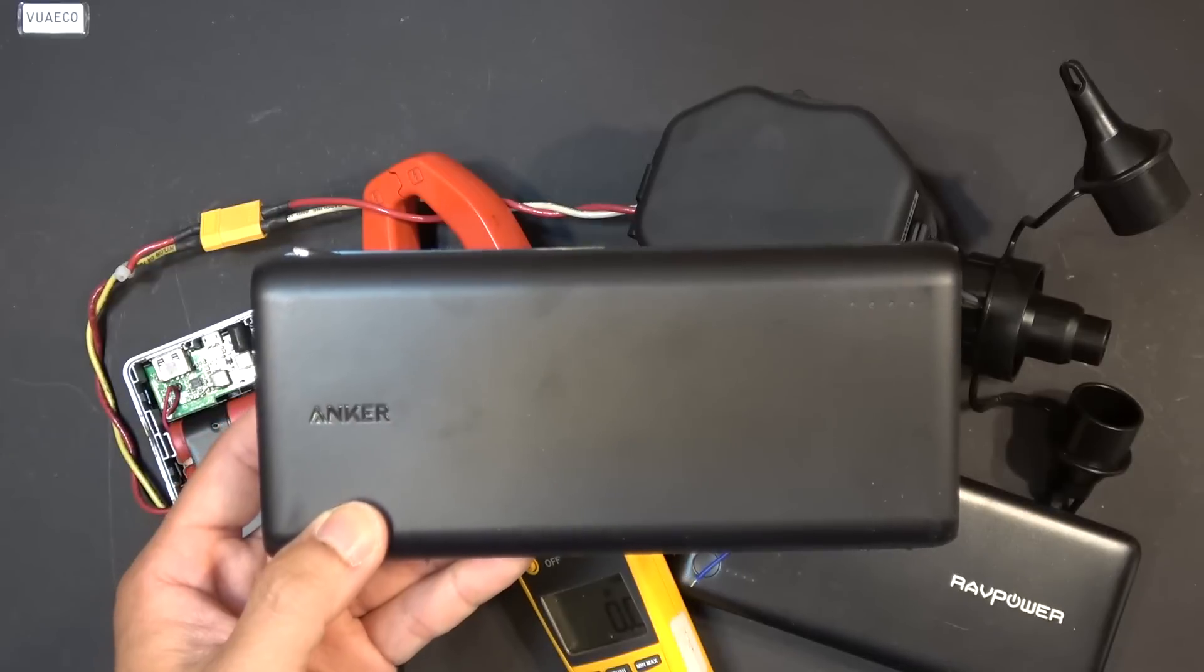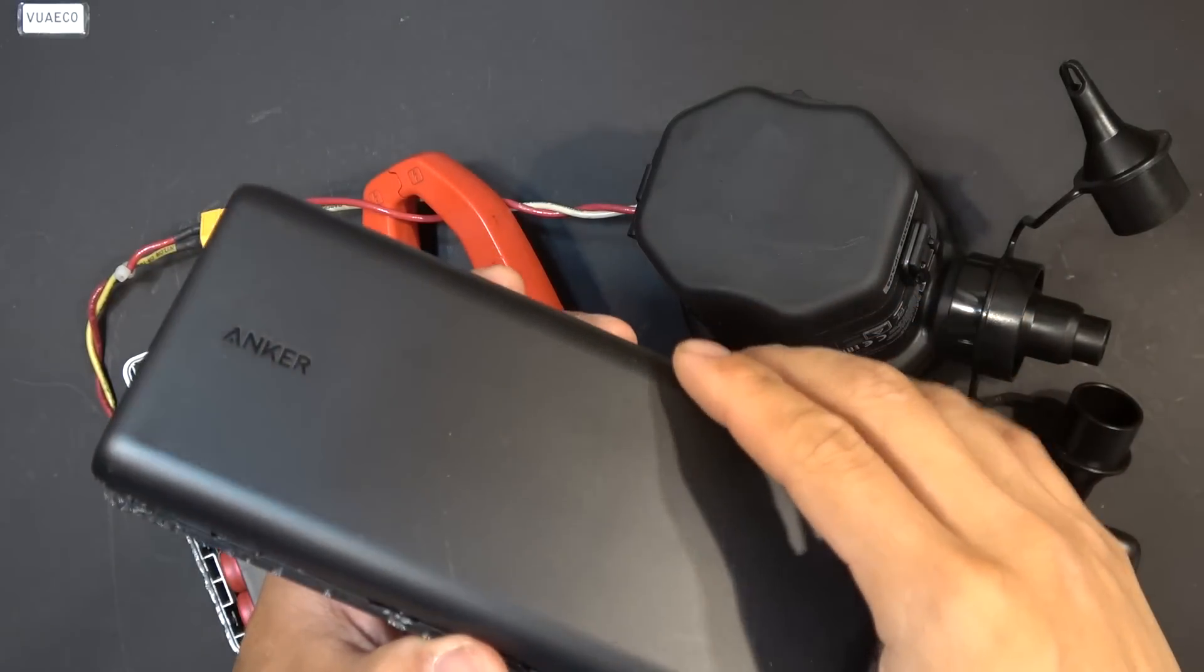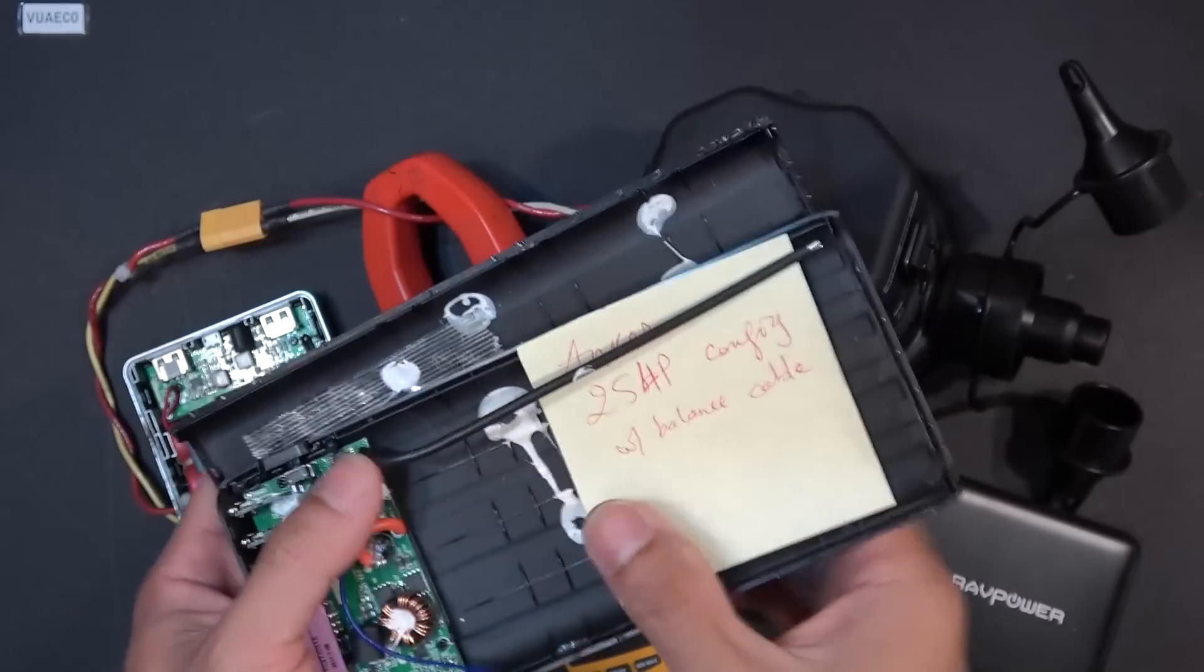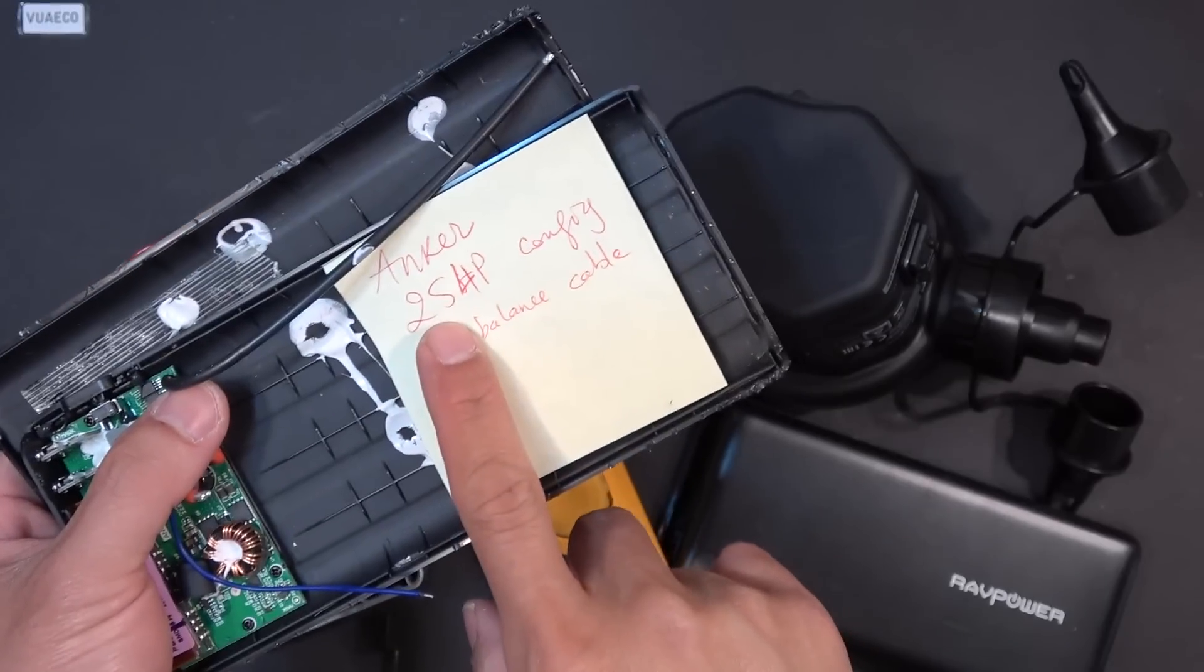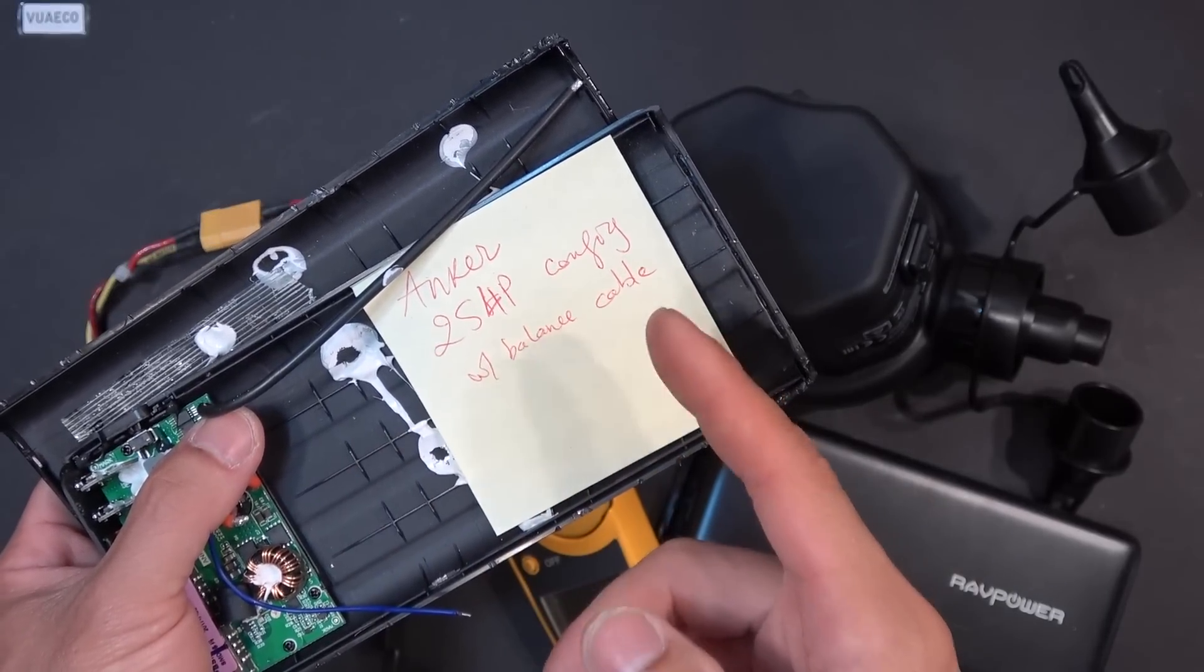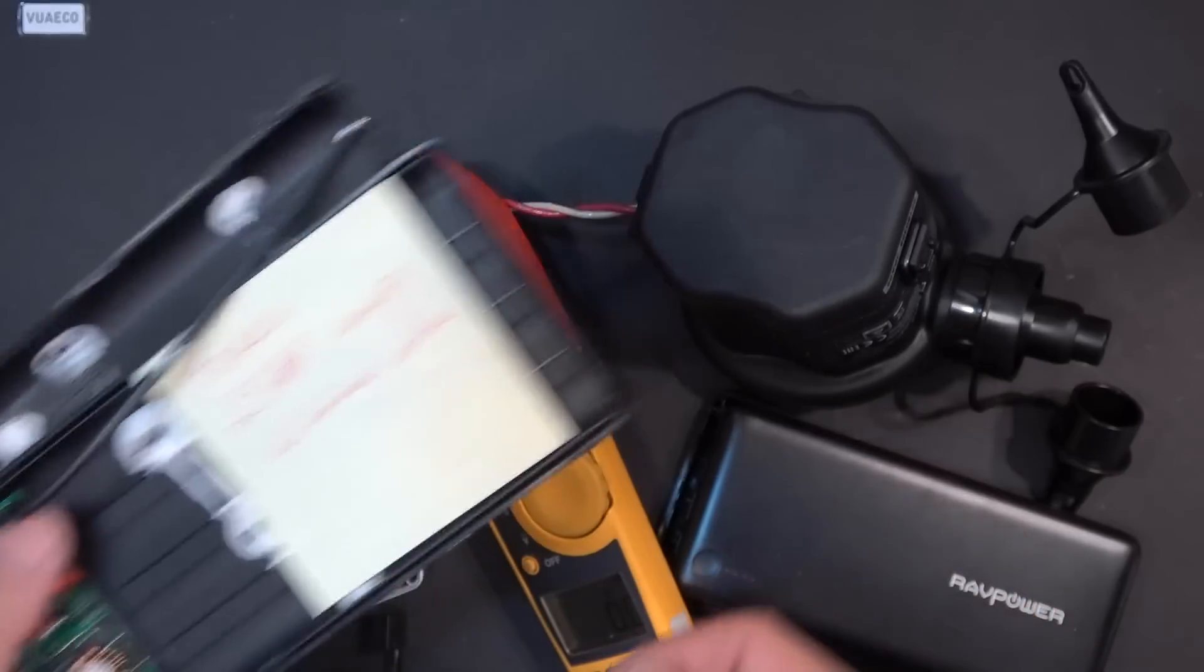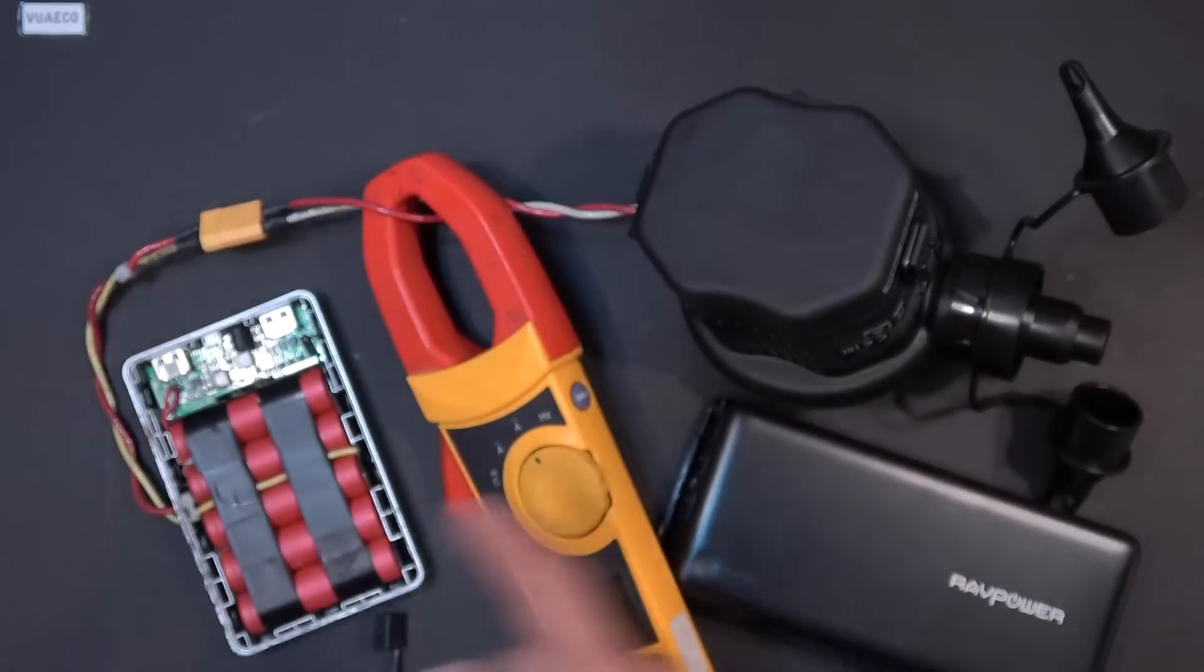That's because these cells here they are not high current cells, they're not high discharge cells. Maximum discharge rate is around three to four amp maximum. However not all power banks are created equal. This is an Anker power bank and it has eight cells in it, eight 18650 cells in it. I already removed the cells by the way but I wrote a note to myself so I can remember. This is in a 2s4p configuration so they are not all in parallel. This is actually 7.4V instead of 3.7V as the RAV power. So this one cannot be used to run this.